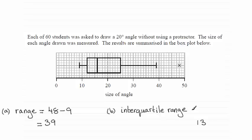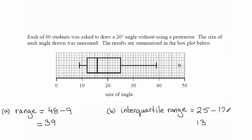For the interquartile range, remember that is equal to the upper quartile minus the lower quartile. The upper quartile is given on this edge here, which turns out to be 25. And we take away from this the lower quartile, which is on this edge here, and that value is 12. So 25 minus 12 comes to 13.